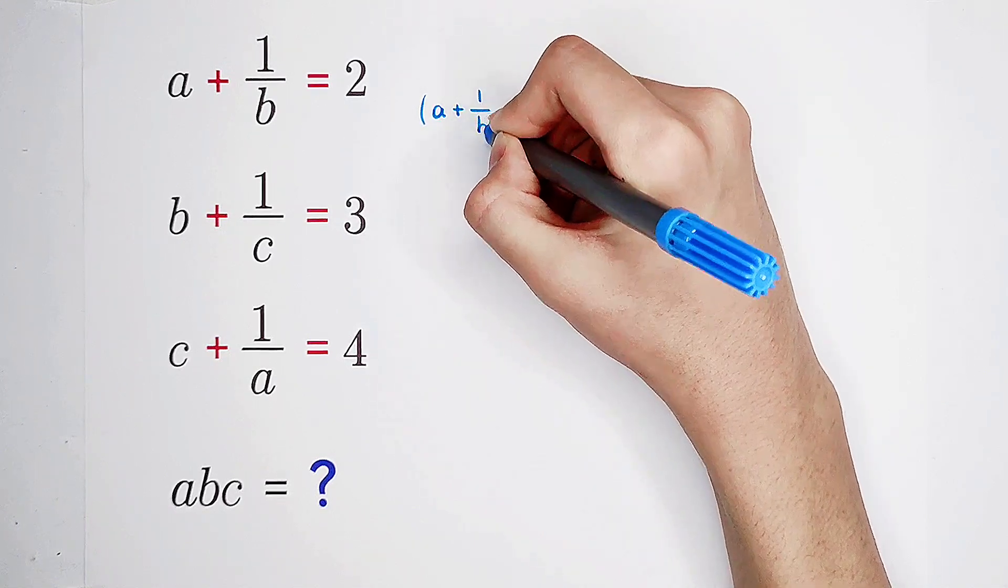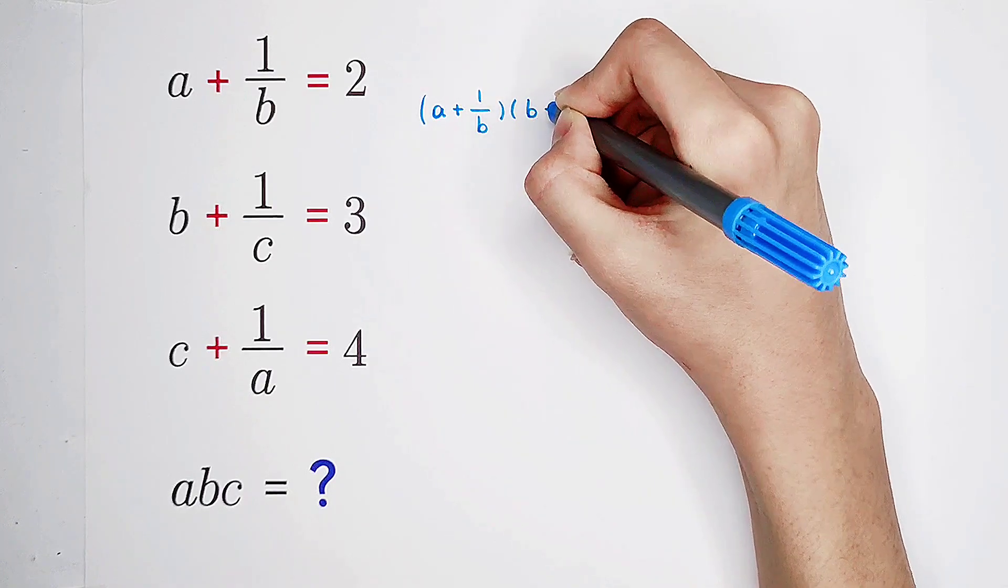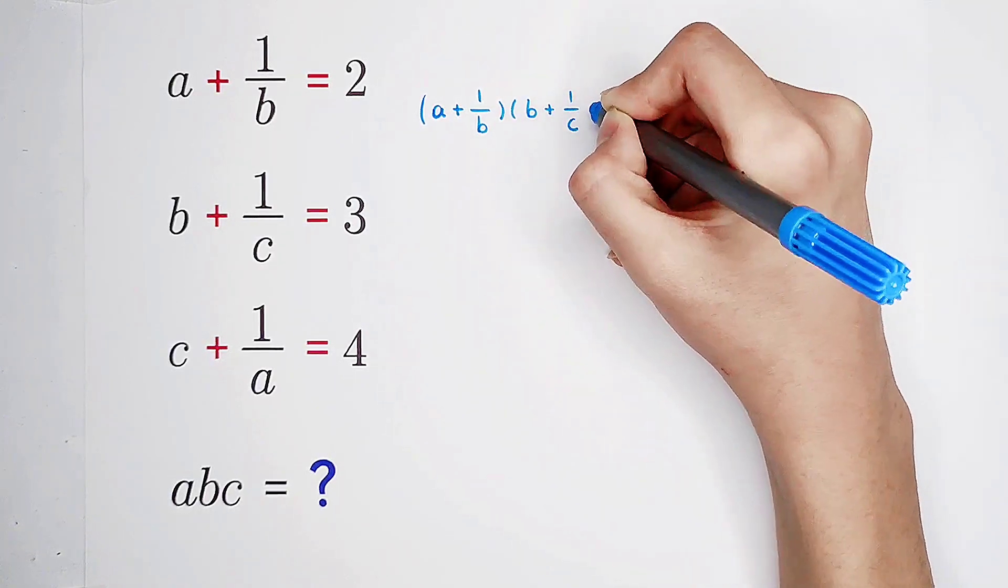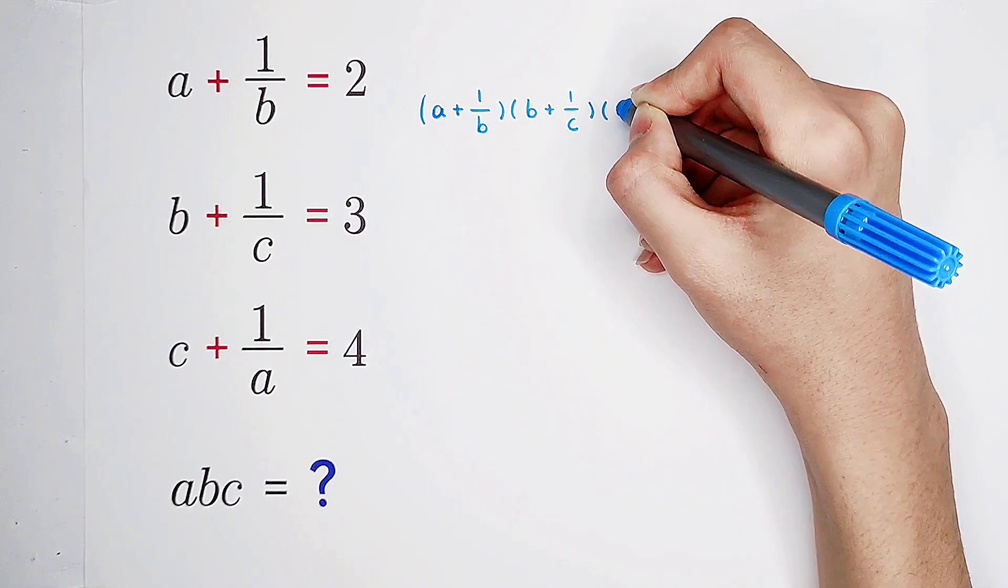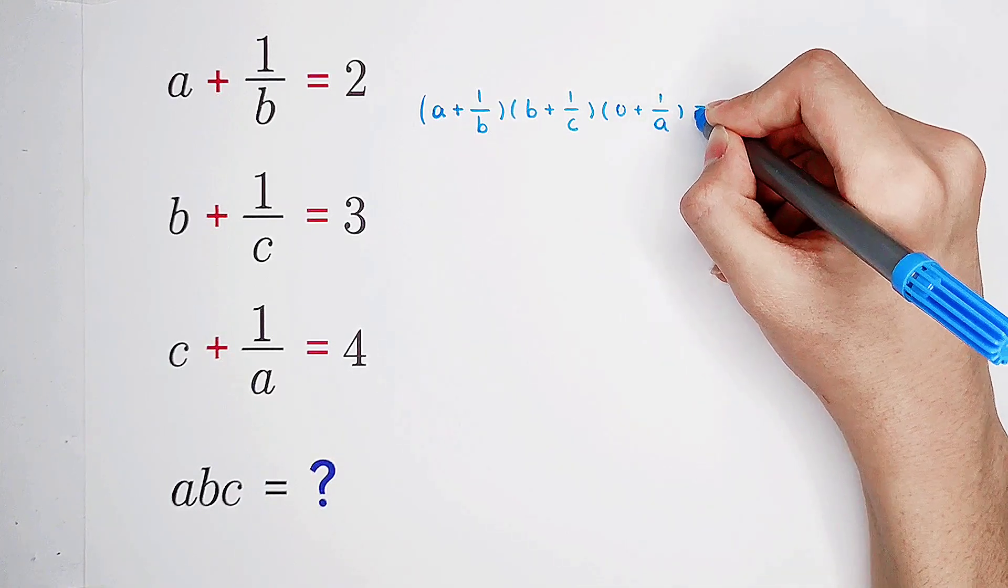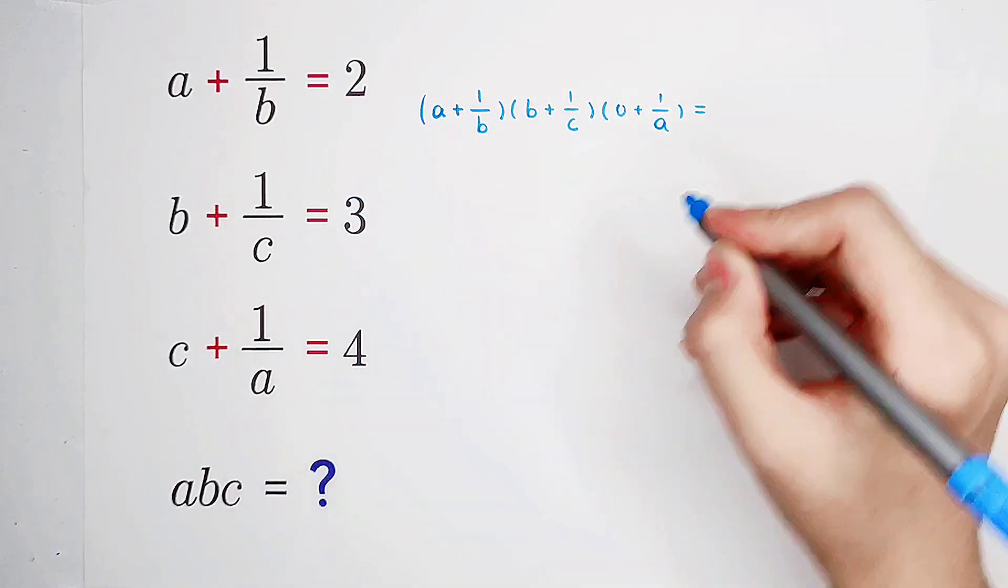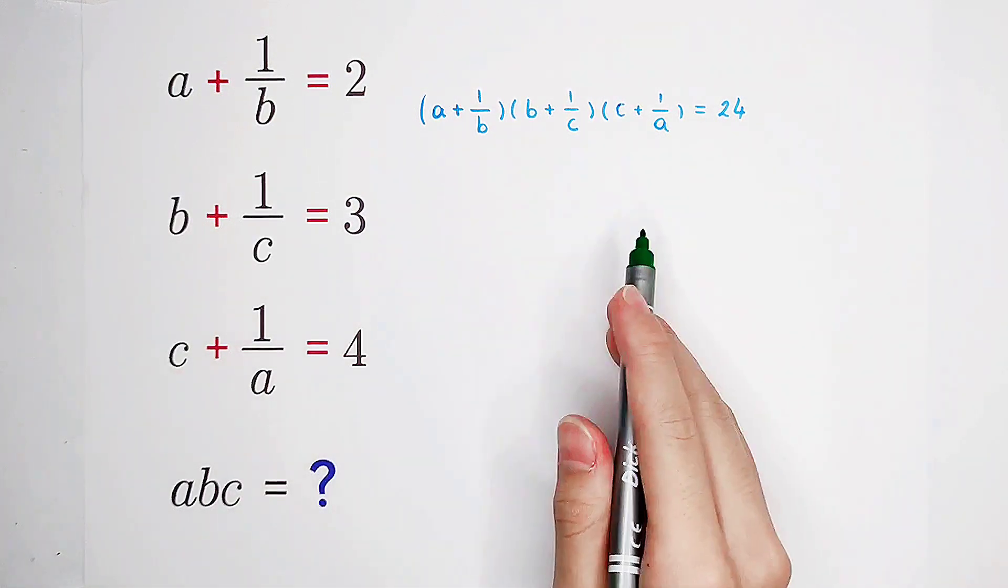a plus one over b, then times b plus one over c, then times c plus one over a, is equal to two times three times four is 24.